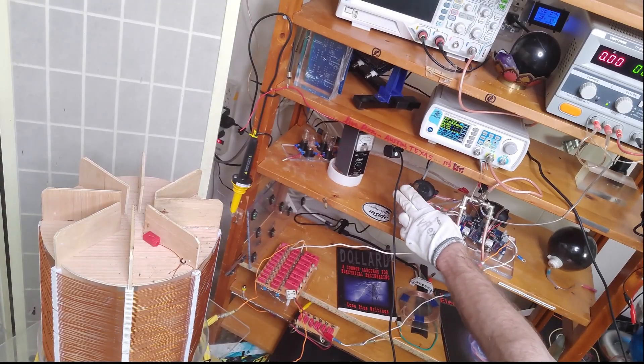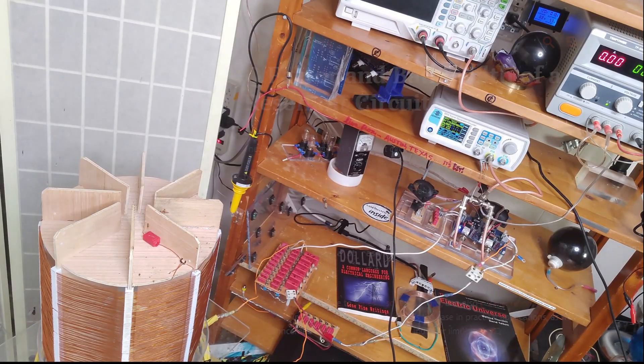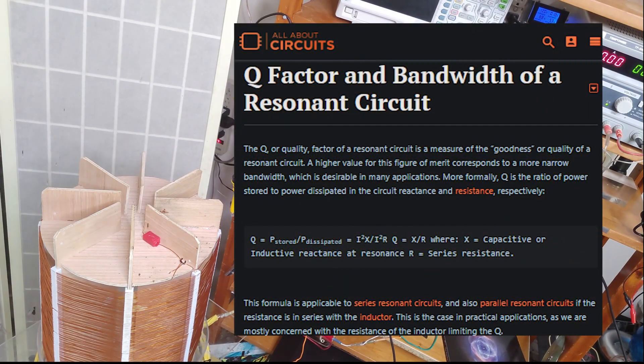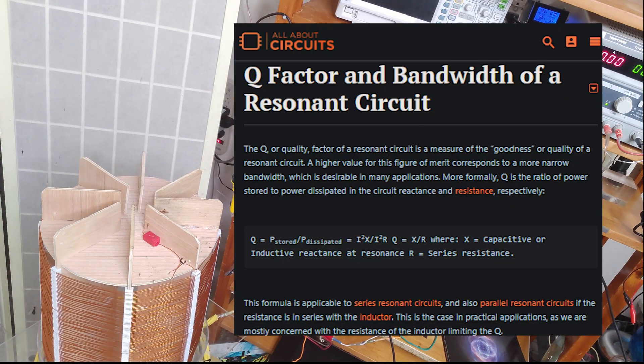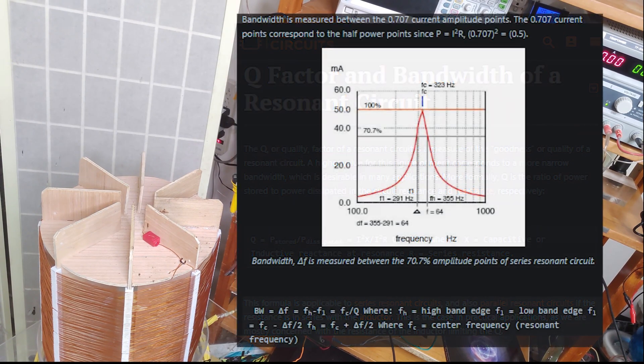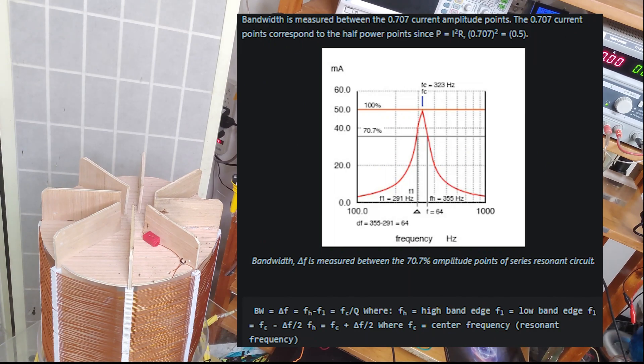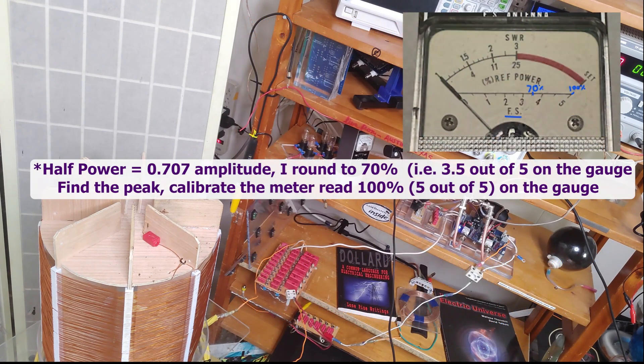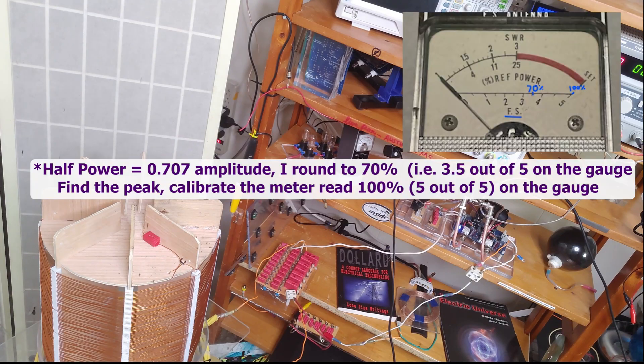This here is the new field strength meter, and it's a real simple way to measure the quality factor Q of the coil. That is the resonant frequency divided by the bandwidth. We'll use this to find the upper and the lower frequencies, and then have a real simple formula to obtain our Q factor.